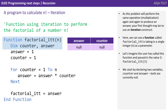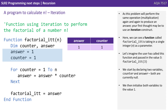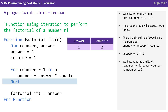Here we can see a function called factor_it, taking a single integer n as a parameter. Let's imagine the user has called the function and passed it the value 3. We start by declaring two variables, counter and answer, both currently null, then initialise both to the value 1. We now enter a for loop for counter equals 1 to n — n is 3 — so this loop will execute 3 times.